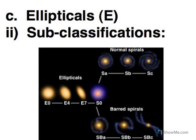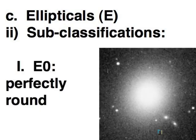Like with the spirals, Hubble came up with subclassifications for ellipticals, and this is going to be based upon how round or how flat the galaxy is. So E0 is where it is pretty much perfectly round, not much flattening at all.